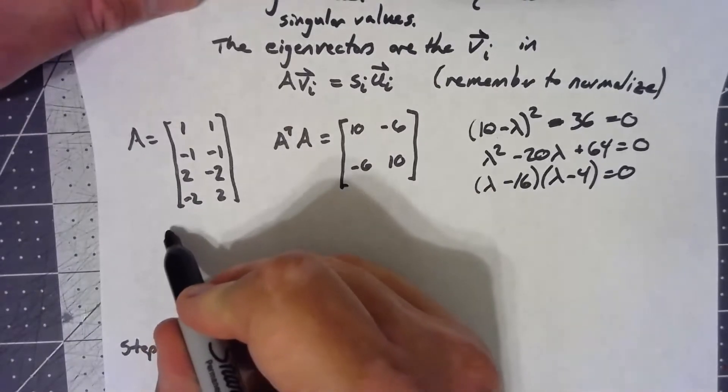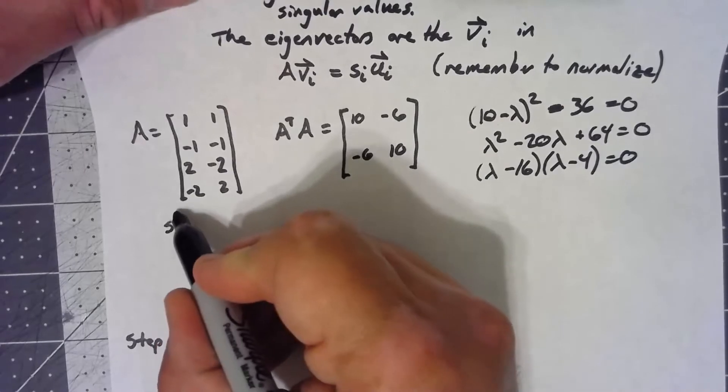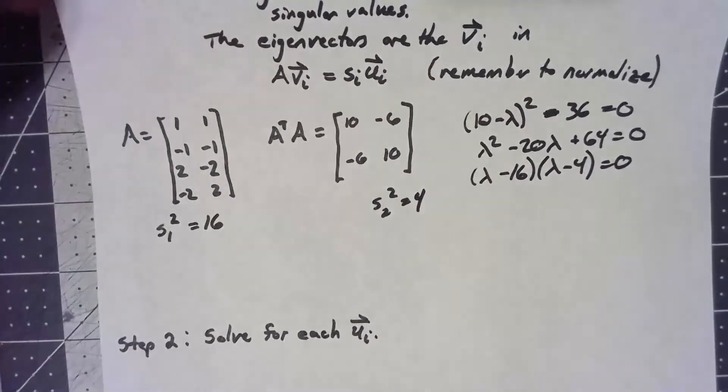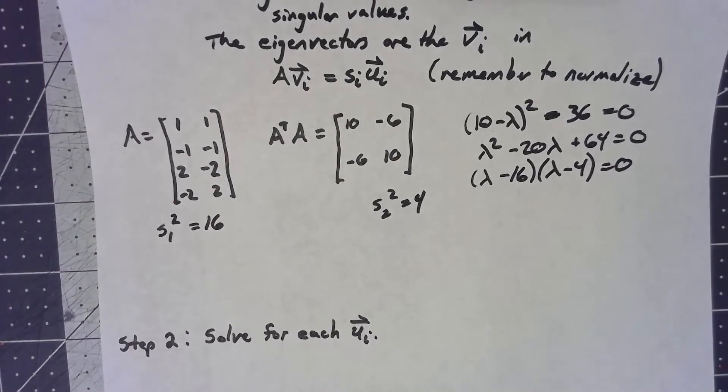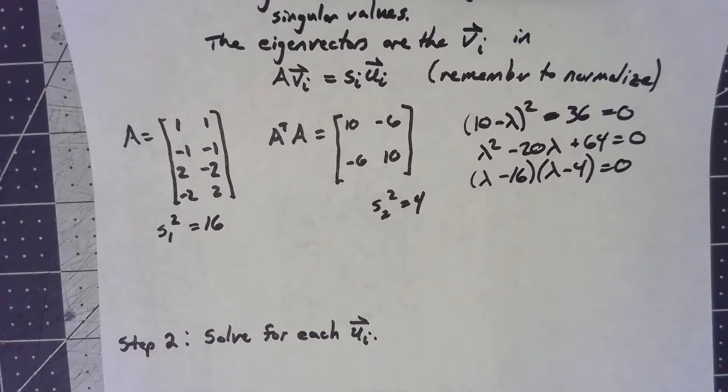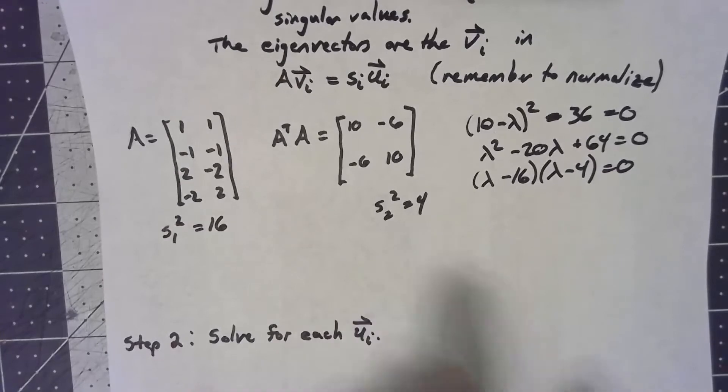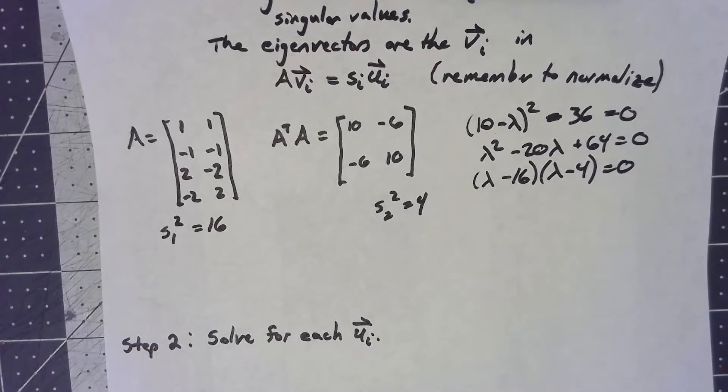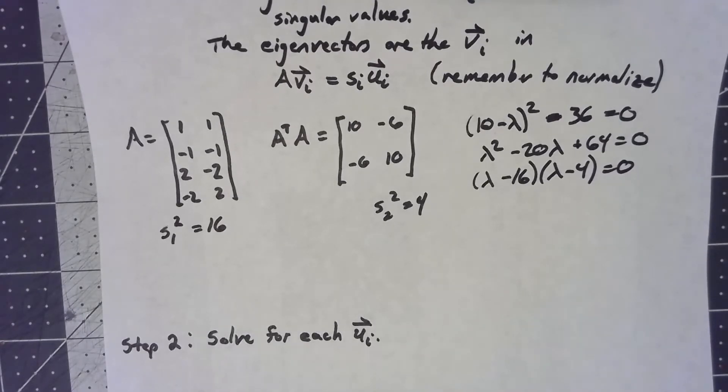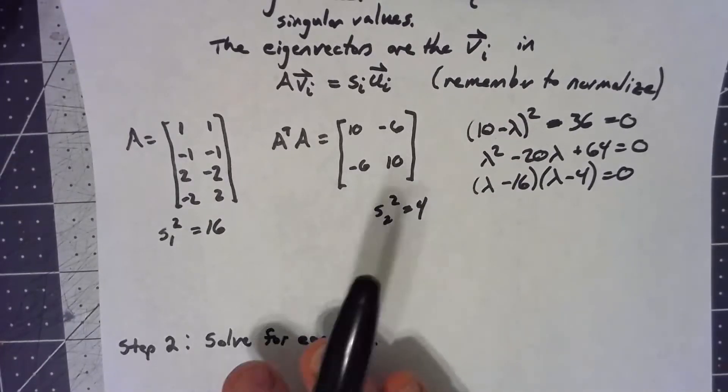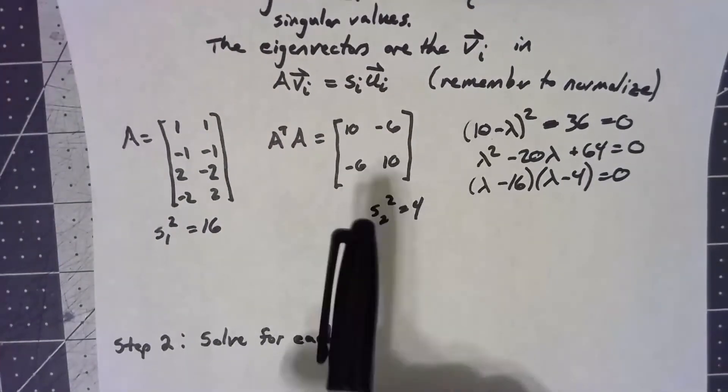Now, those eigenvalues, even though I've written them as lambda, are really my singular values squared. So s1 squared is 16, s2 squared is 4. This does mean that my singular value could either be 4 or negative 4, could be either 2 or negative 2. Perfectly fine. I'm going to go ahead and take the positive ones. It really doesn't matter. It would work perfectly fine if we took the negative versions of the singular values.